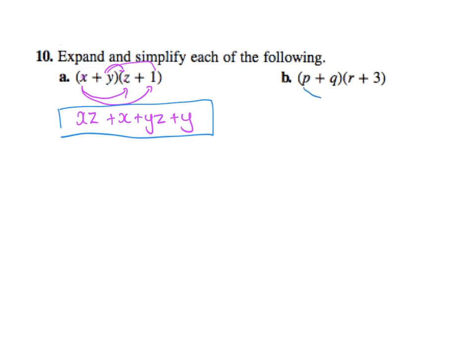The next one, p times r would be pr, p times three would be three p, then q times r, qr, then q times three is plus three q. Now there's no like terms again here so that's got to be my answer like that.